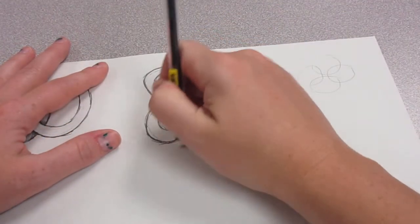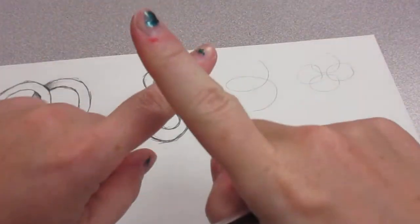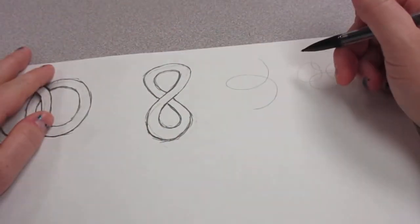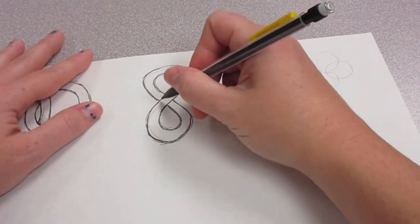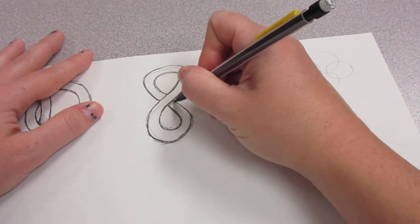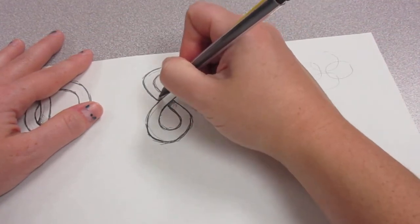All right, so we've got an eight with an overlap. And we could do a little shading. So where it overlaps, you make a little darkness that gets lighter as it gets further away.